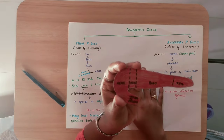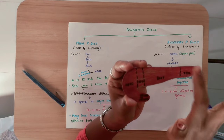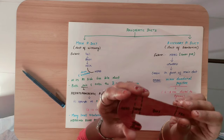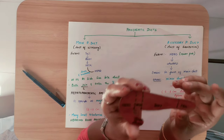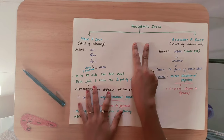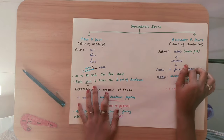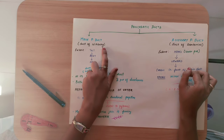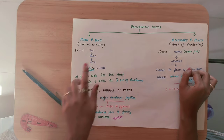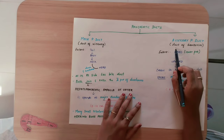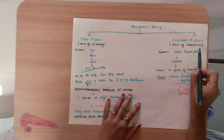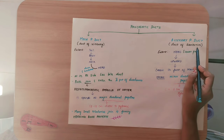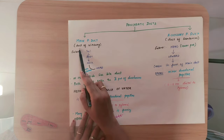So this is the pancreas anatomy — head, neck, body, and tail relations. The pancreas is also an exocrine gland, so it has ducts. There are two ducts: the main pancreatic duct and the accessory duct. The main duct is called the duct of Wirsung (W-I-R-S-U-N-G), and the accessory pancreatic duct is called the duct of Santorini.